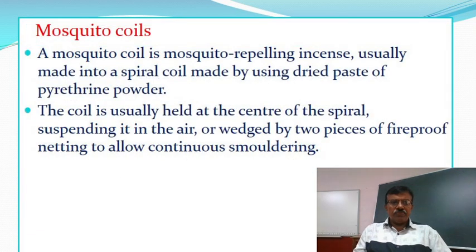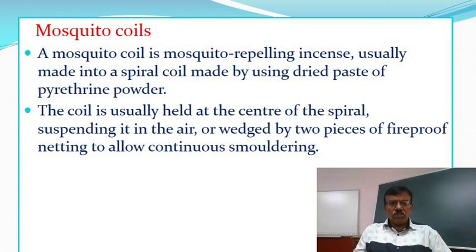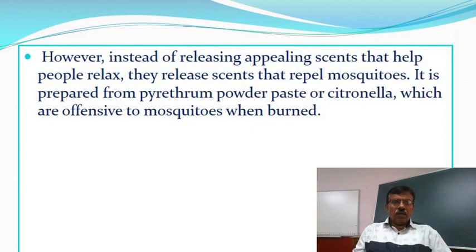Mosquito Coils. A mosquito coil is a mosquito-repelling incense, usually made into a spiral coil, made by using dried paste of pyrethrin powder. The coil is usually held at the centre of the spiral, suspending it in the air, or wedged by two pieces of fireproof netting to allow continuous smouldering. They release scents that repel mosquitoes.